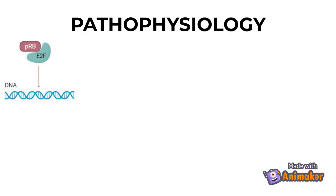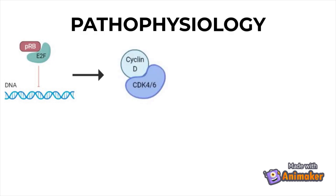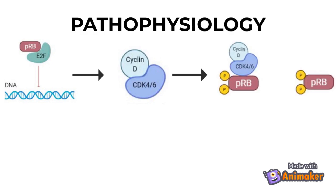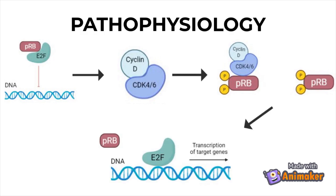When cells reach the G1 checkpoint at the end of the G1 phase, they seek entry into the S phase, where DNA replication occurs. Prior to entry into the S phase, E2F must bind to DNA and transcribe the required genes needed to make proteins for DNA replication. To set E2F free, PRB needs to be inactivated by phosphorylation, which refers to the addition of phosphate groups to a protein. The phosphorylation of PRB is accomplished by the CyclinD-CDK4/6 complex, which adds phosphate groups to PRB and sets E2F free, allowing it to bind to DNA and transcribe the required genes, thus controlling the cell's progression through the cell cycle.